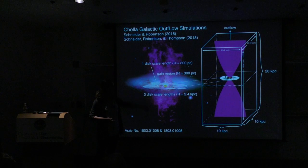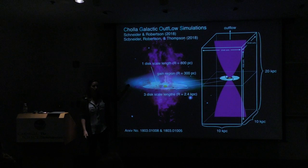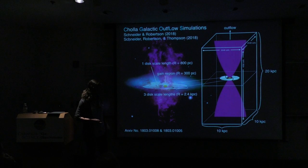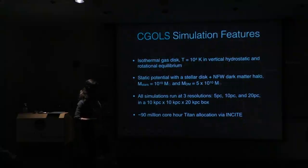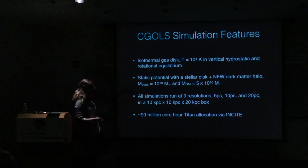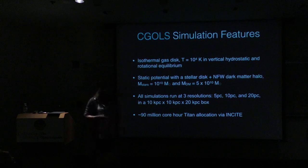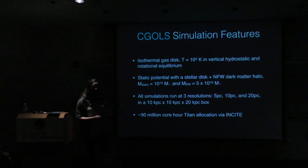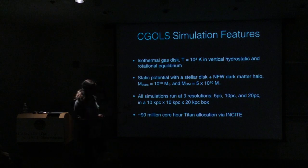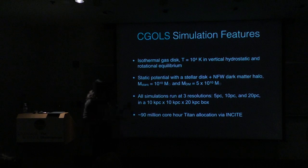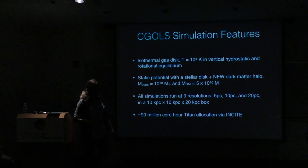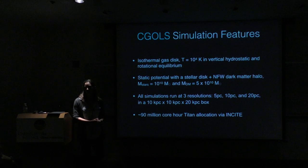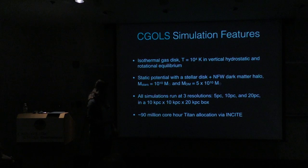This is an incredibly idealized simulation. Our disc is a single-phase 10^4 K ISM. We're not trying to resolve star formation self-consistently. We're approaching this as a series of simulations stepping further from analytic models to understand what features matter. Because of high resolution, we achieve a maximum resolution of 5 parsecs throughout the entire volume - something that has not been done before. We use an isothermal gas disc with a cooling floor of 10^4 K, a static gravitational potential consisting of a stellar disc and dark matter halo, and run simulations at 5, 10, and 20 parsec resolutions to assess convergence. This is done via an allocation on Titan through the INCITE program.